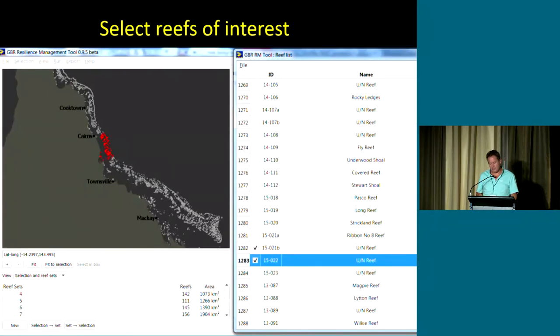When you boot this software, the first thing it allows you to do is to pick whichever reefs of interest you have. You can pick according to management zones, geographic regions, AIMS sectors, you can go in by hand and pick particular locations, whatever you want. You can define sets of reefs that you either want to study and look at their response to management or sets of reefs that you want to apply some interventions to.